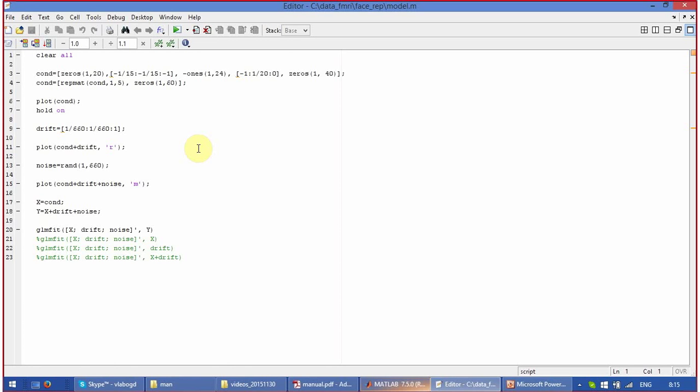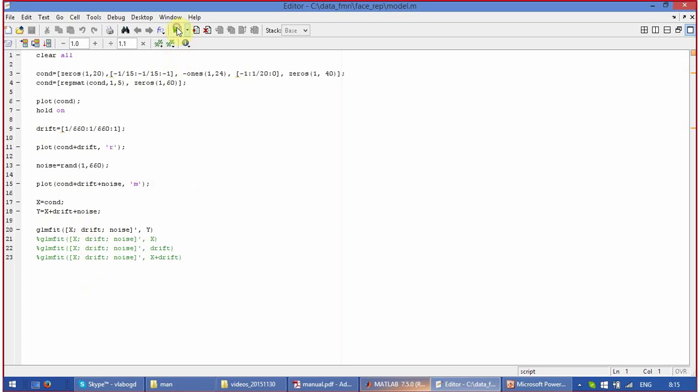So if you don't want to repeat step by step, you can execute everything at once simply by pressing this button, green button 'run model,' and it will execute everything at once. Let's do it. OK. So this is the X, this is the X plus drift in red, and in magenta it is the X plus drift plus noise.